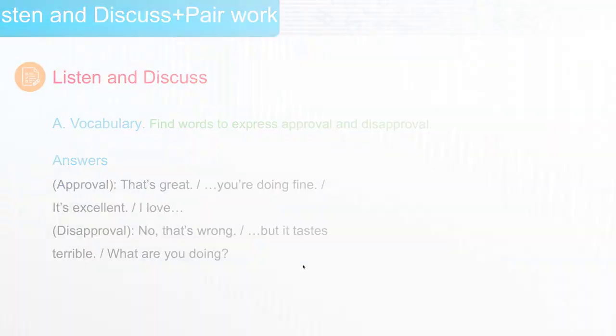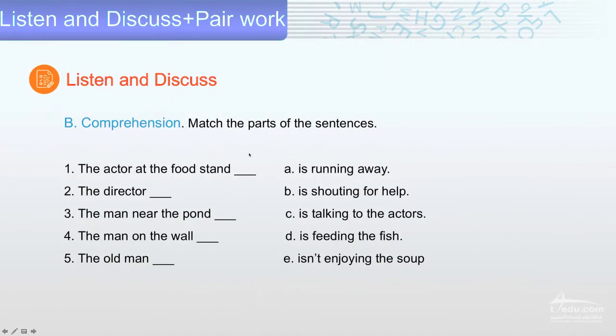Match the parts of the sentences. Number one, the actor at the food stand. Number two, the director. Number three, the man near the pond. The pond means like small lake filling water. Number four, the man on the wall. Number five, the old man. A is running away. B is shouting for help. C is talking to the actors. D is feeding the fish. E isn't enjoying the soup.